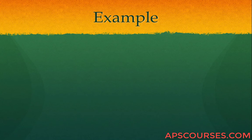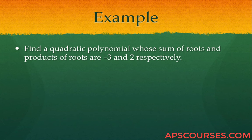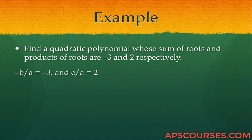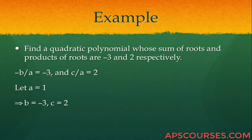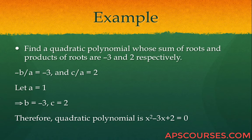Let us consider an example: find a quadratic polynomial whose sum of roots and product of roots are minus 3 and 2 respectively. It is given that minus b by a equals minus 3 and c by a equals 2. Let a equal 1. Therefore b equals minus 3 and c equals 2, so the quadratic polynomial is x squared minus 3x plus 2 equals 0.